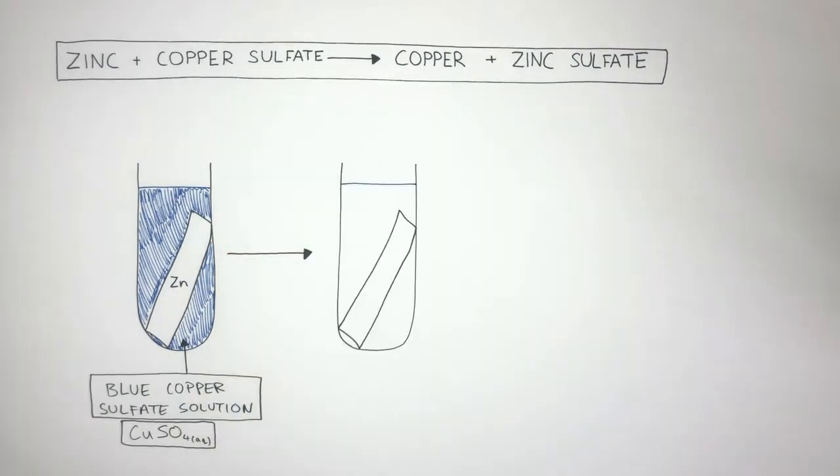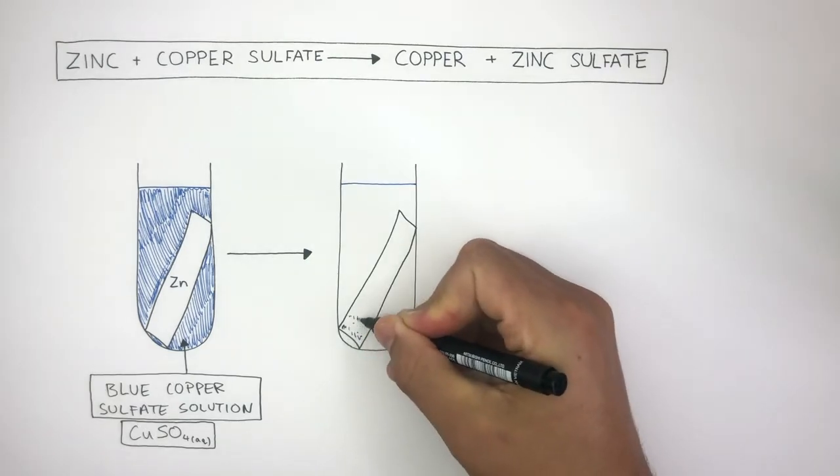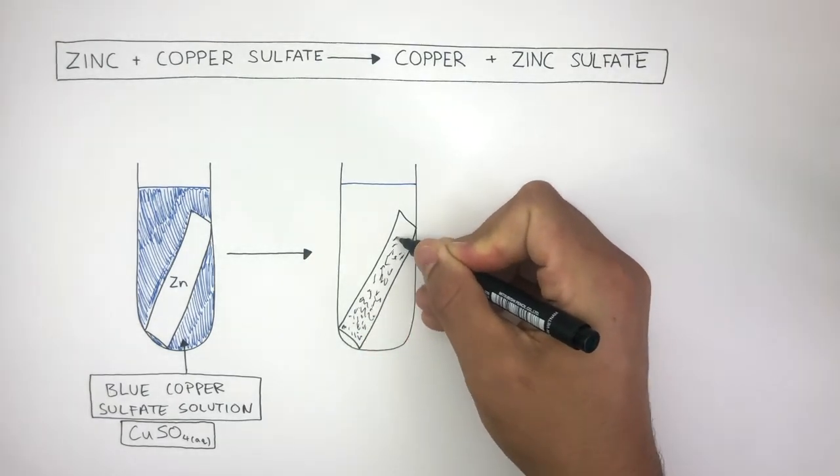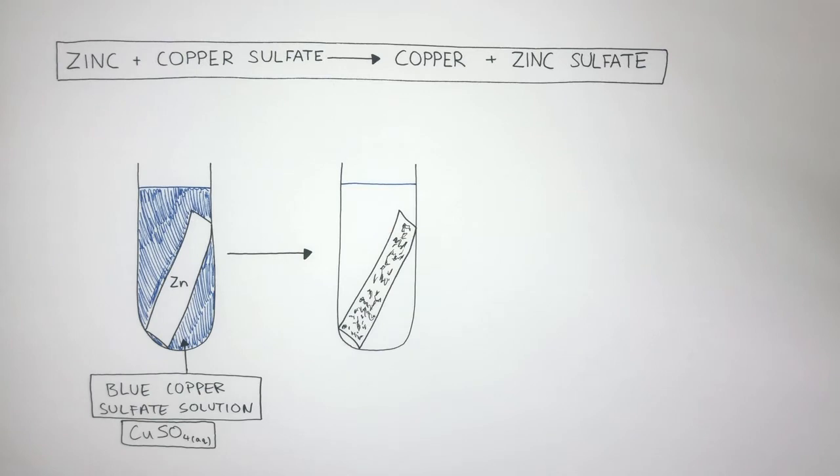As the reaction progresses, the zinc and copper sulfate react. A copper coating begins to form on the surface of the zinc. This happens because the zinc takes the place of the copper, forming zinc sulfate.